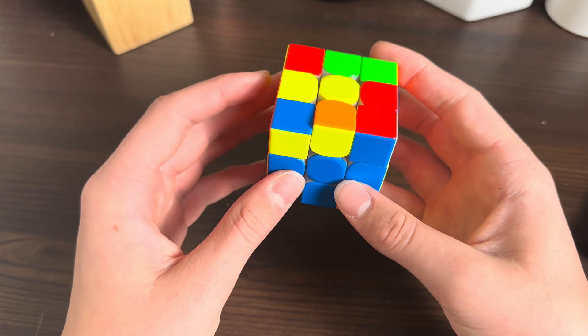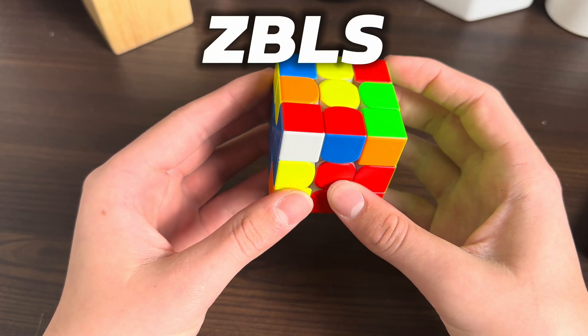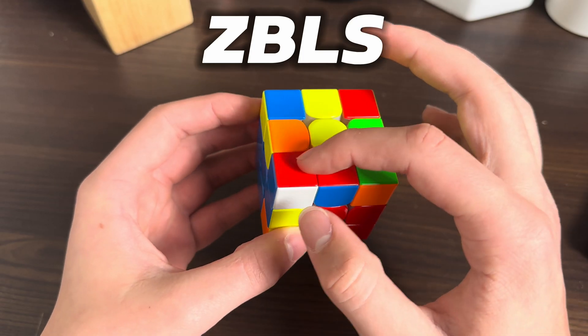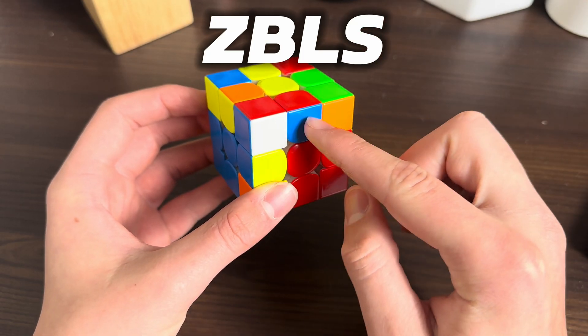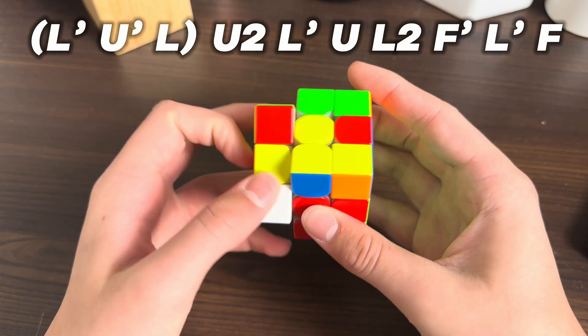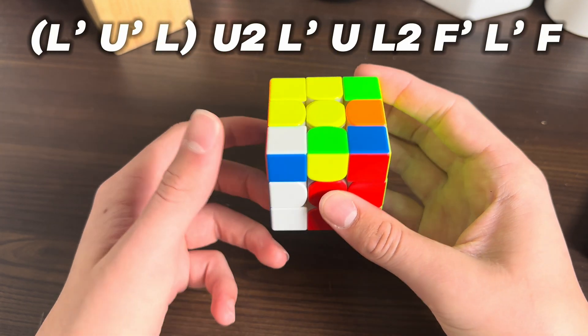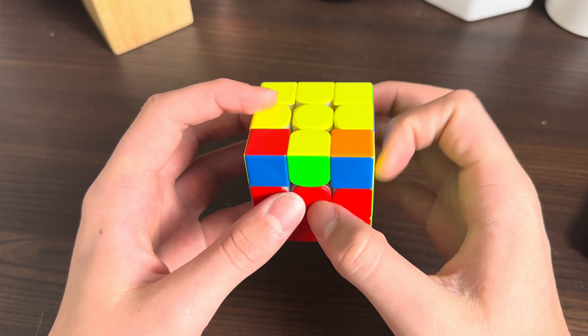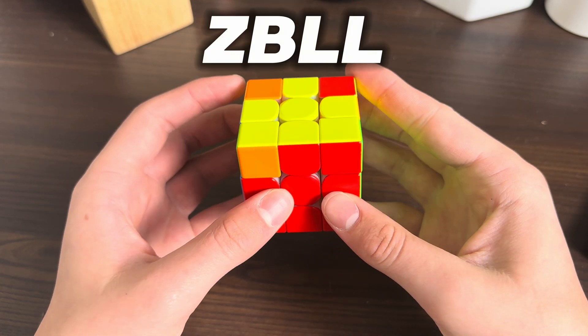For the ZBLS, these two match on top and they're touching like this, you got the yellow edge right here. The ZBLS goes like this: you insert the corner, do a U2, then pair it up, and then sledgehammer U2, and then you got ZBLL.